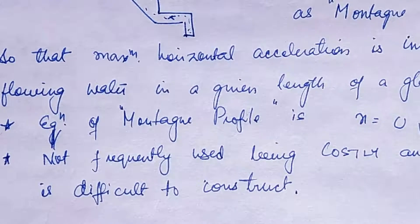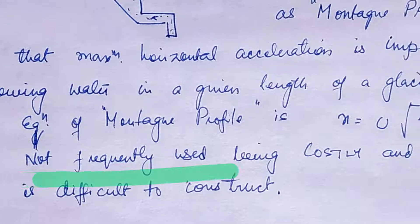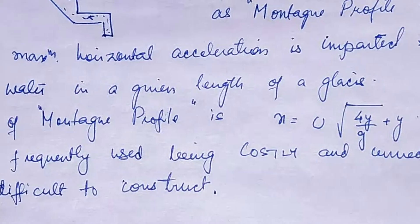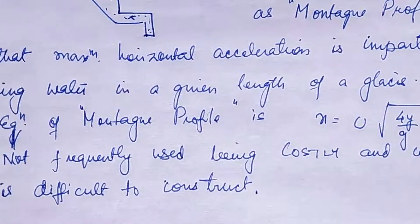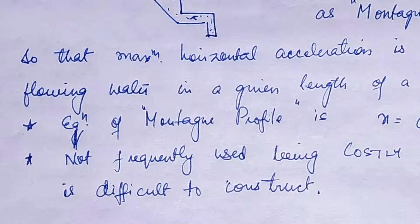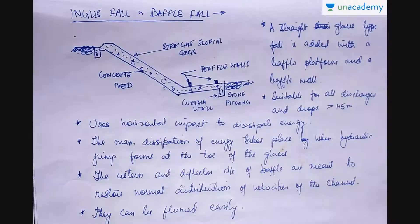The mountain type fall is not very frequently used because it is very costly and it is very difficult to construct the curved shape of the glacis profile.